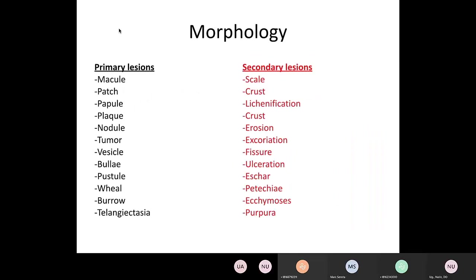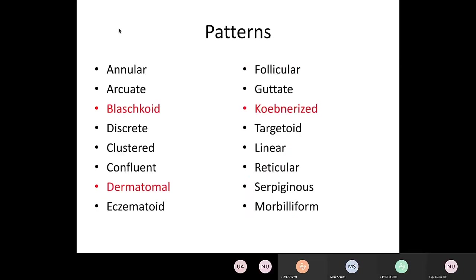Bullae are large, greater than one centimeter, fluid-filled lesions — they can be flaccid or tense. An example would be bullous pemphigoid. Pustules are small, usually less than a centimeter, and contain pus instead of clear fluid. An example would be pustular psoriasis, but many things can cause pustules. You can also have burrows, which are linear tracks usually from infestations of the skin such as scabies or cutaneous larva migrans — you can see the linear track underneath the skin.